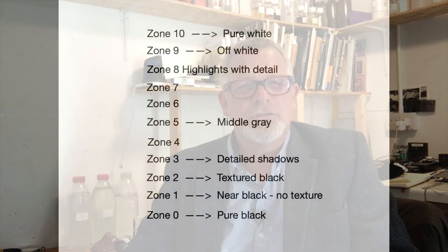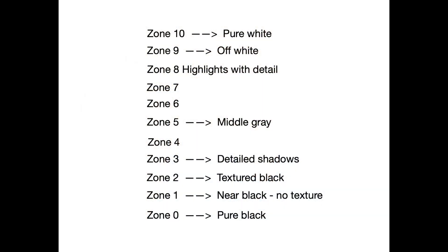Let's look at the computer for a moment. The zone system can be read about in multitudes of books and there are loads of videos on YouTube about it, but what I want to focus on and what I will use on my channel is a very simplified zone system — the one that really matters to us as black and white photographers. There are really three zones we are bothered about: zone three, zone five, and zone eight.